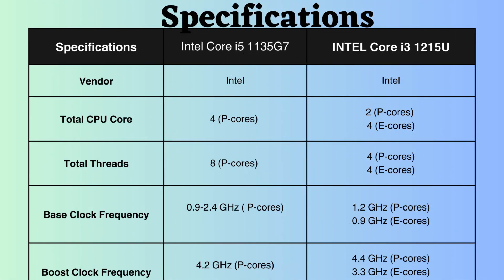The Intel Core i5-1135G7 has 4 performance cores and 8 performance threads, while the Intel Core i3-1215U has 2 performance cores and 4 performance threads. Additionally, the i3-1215U has 4 efficiency cores and 4 efficiency threads. Having more cores and threads allows the processor to handle more tasks simultaneously and efficiently.